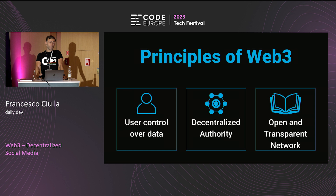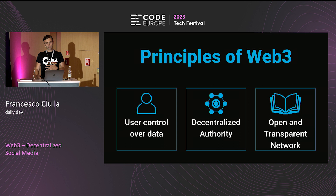Three simple principles of web3: first, users have control over the data they create. Second, the concept of decentralized authority — by architecture, blockchains have a consensus algorithm, so by architecture they help create something more decentralized. And third, a more open and transparent network, which has some good advantages.